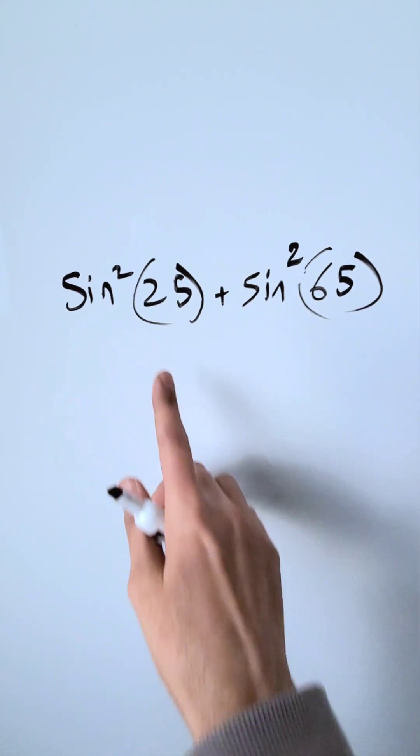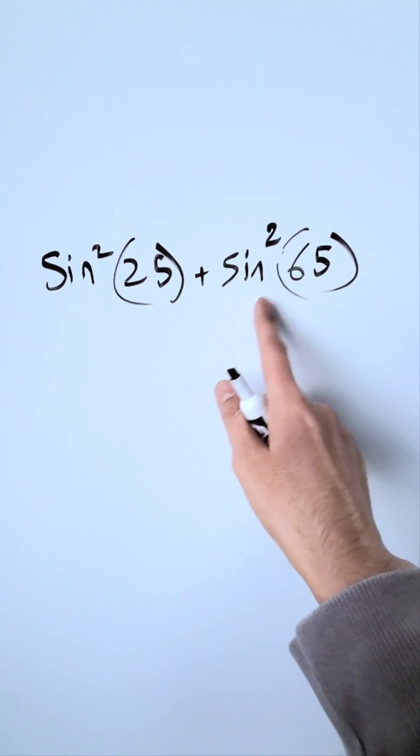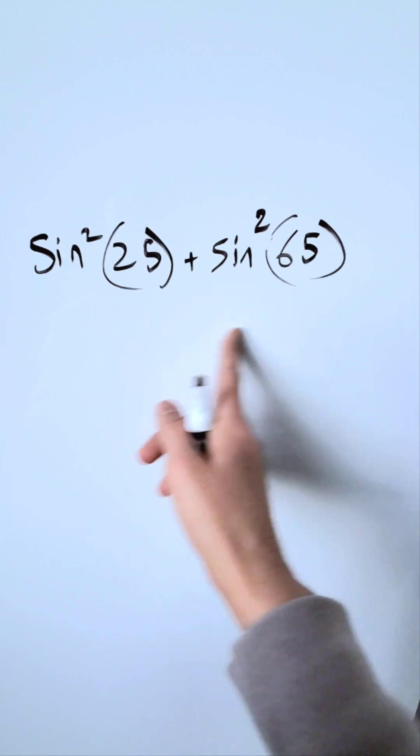Let's evaluate this expression: sine squared 25 plus sine squared 65 is equal to what? No calculator allowed.